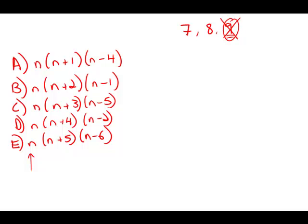So first, plugging into A: if I plug in n equals 7 in A, what I get is 7 times (7 plus 1), which is 8, times (7 minus 4), which is 3. I don't need to multiply that